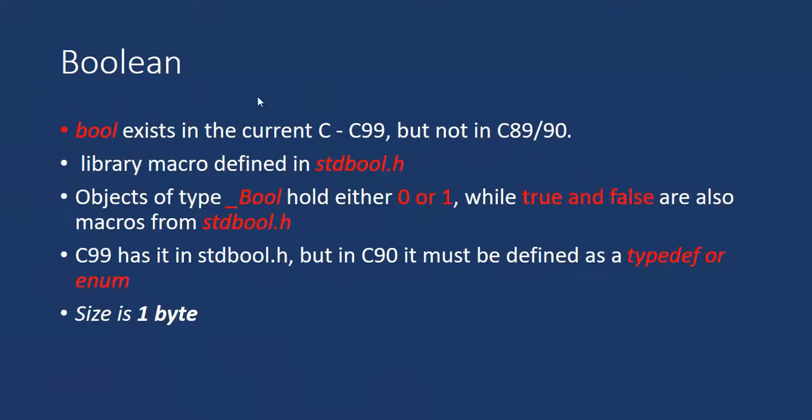First comes Boolean. Boolean was not there in the previous versions of C, but it was introduced in C99 version. It belongs to stdbool.h header file. It is an object type _Bool, which holds 0 or 1 or true or false as a value. In C90, if you want to use Boolean, then you must define it using typedef or enum. Basically they are used to define new data types in C or user-defined data types.